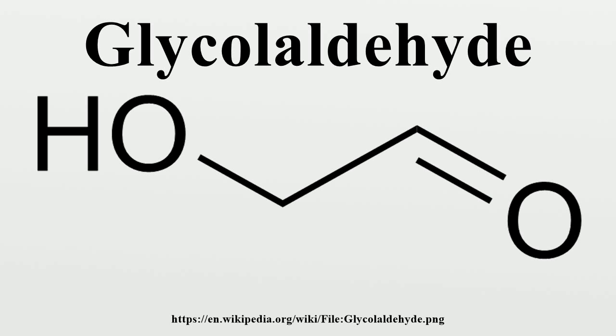Two glycolaldehydes condense to form erythrose-4-phosphate, which goes to the pentose phosphate shunt again.